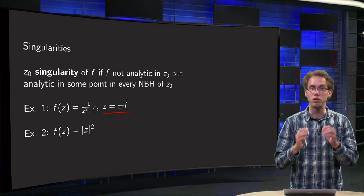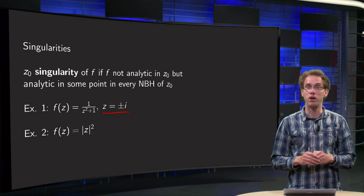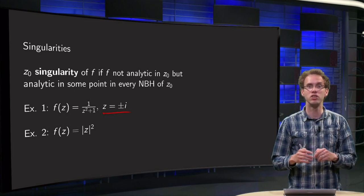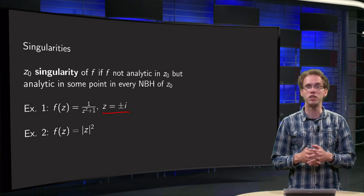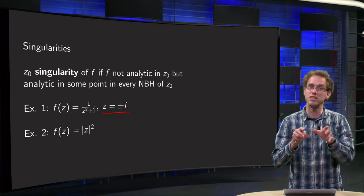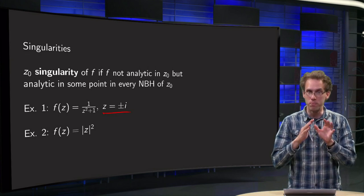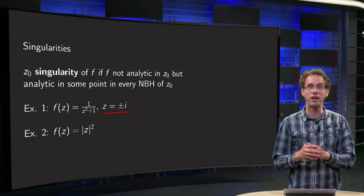Second example, modulus of z squared. Well, you know, Cauchy-Riemann never holds for this function, only in the origin, but analytic means analytic at least in some neighborhood. So this f(z) equals modulus of z squared is nowhere analytic.